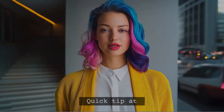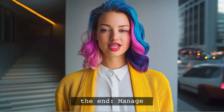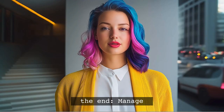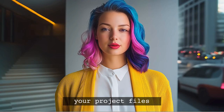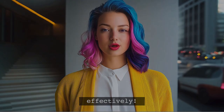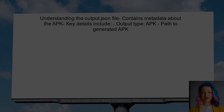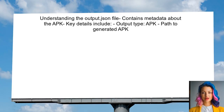And stick around — at the end of this video, I'll share a quick tip on how to manage your project files effectively. To understand the purpose of the output JSON file, recognize that this file contains metadata about the APK that was built. It provides details such as the output type and the path to the generated APK.